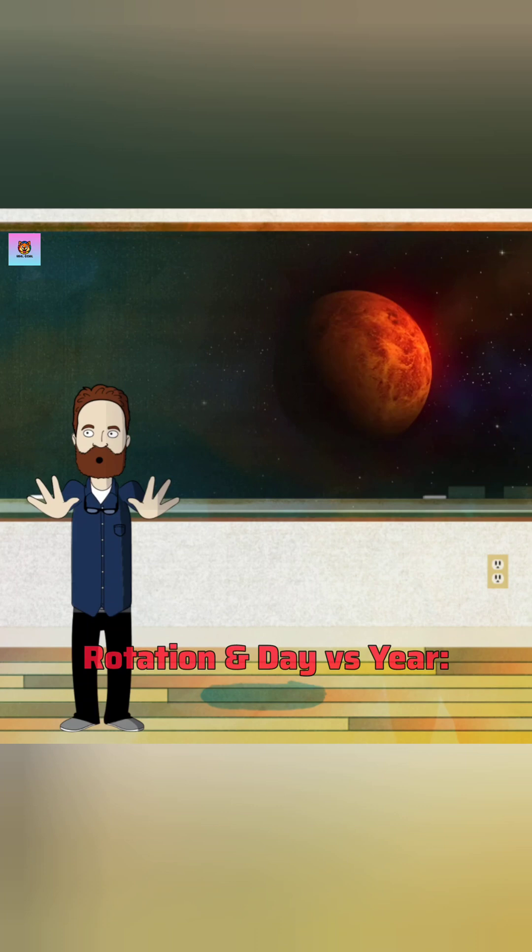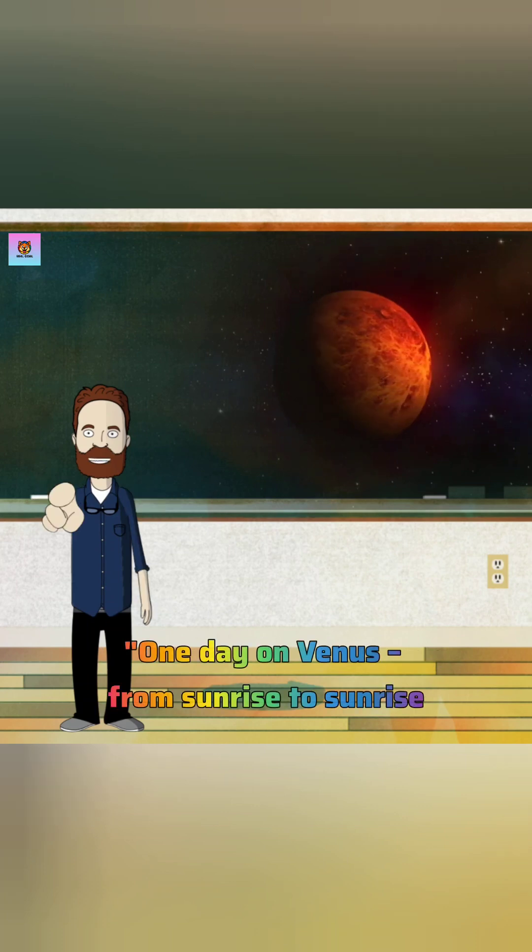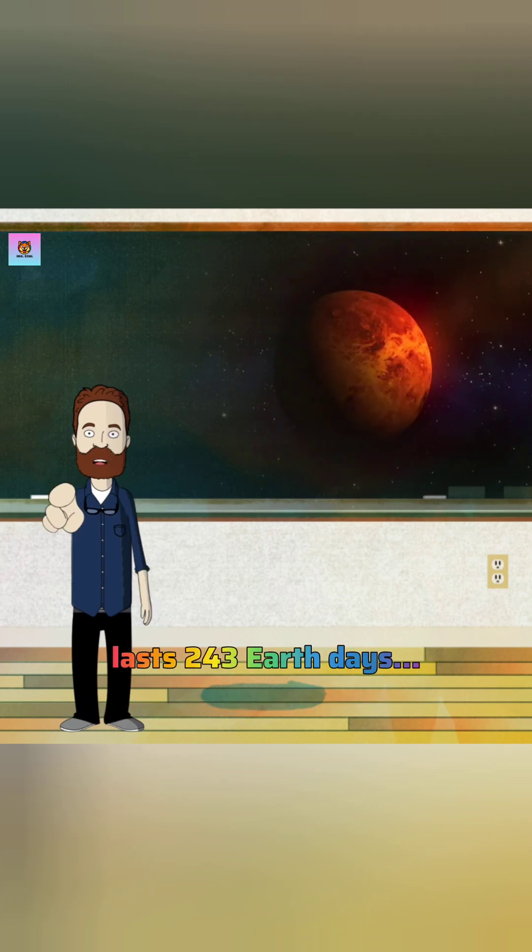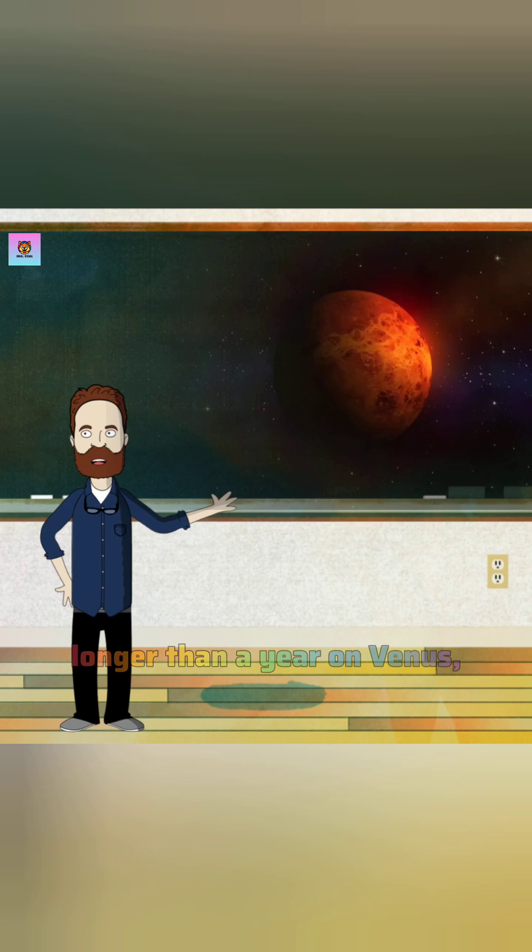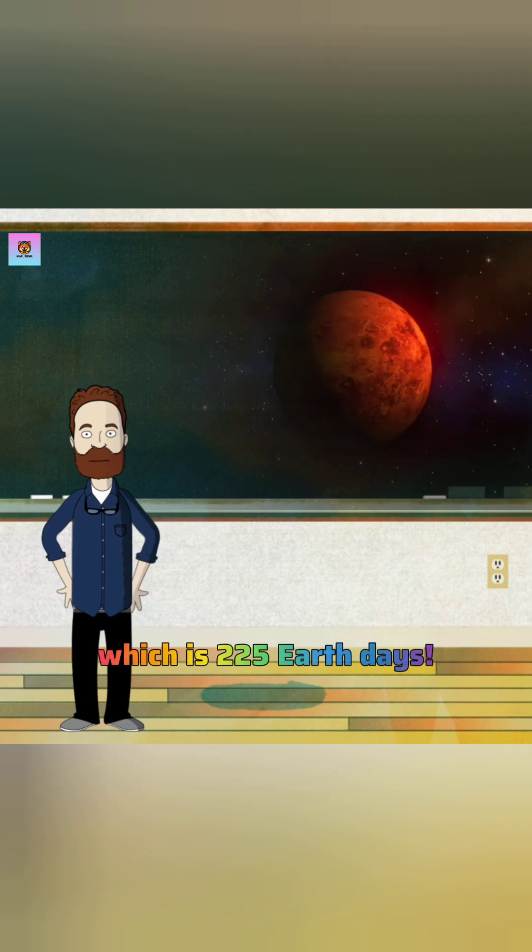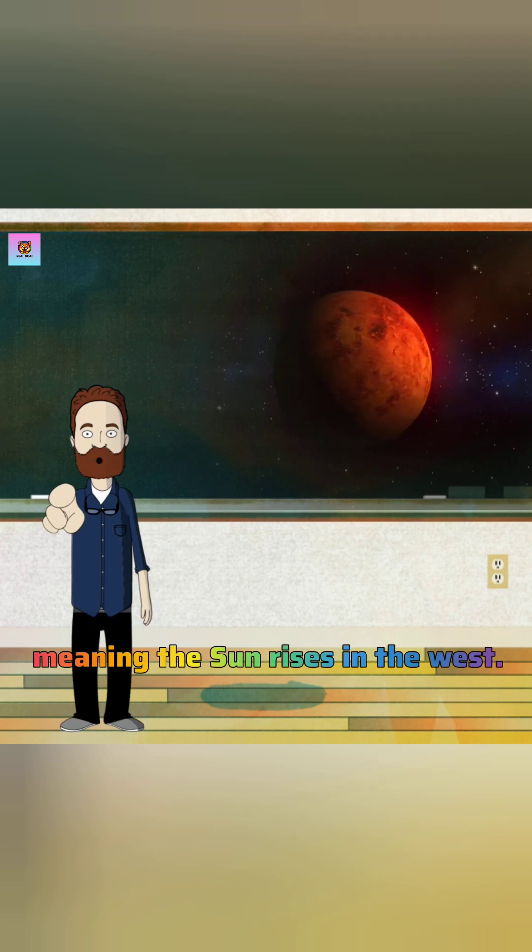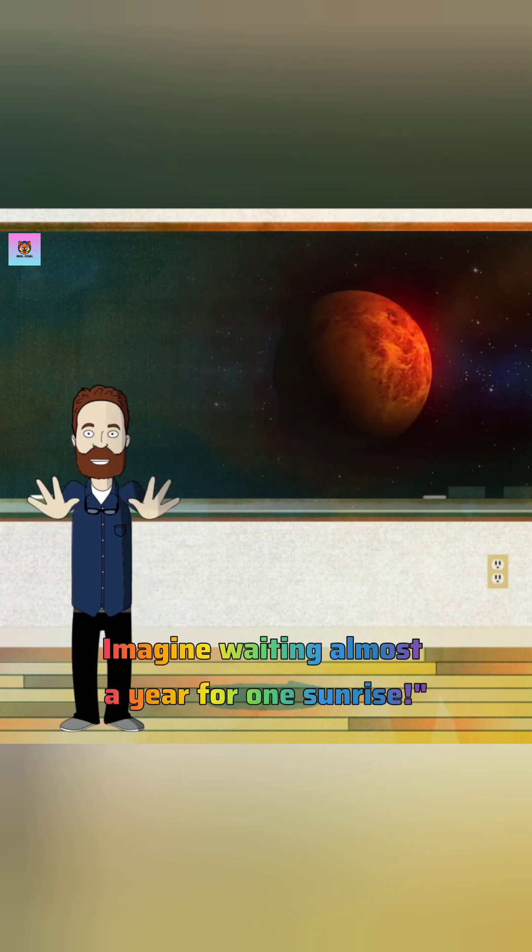Rotation and day versus year: One day on Venus, from sunrise to sunrise, lasts 243 Earth days, longer than a year on Venus which is 225 Earth days. It even spins backwards, meaning the sun rises in the west. Imagine waiting almost a year for one sunrise.